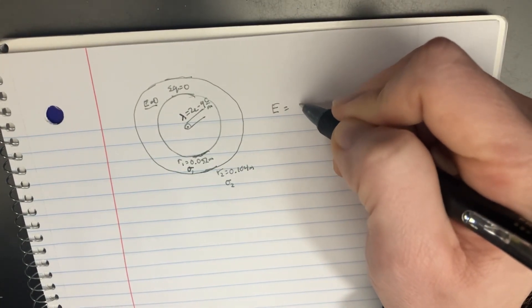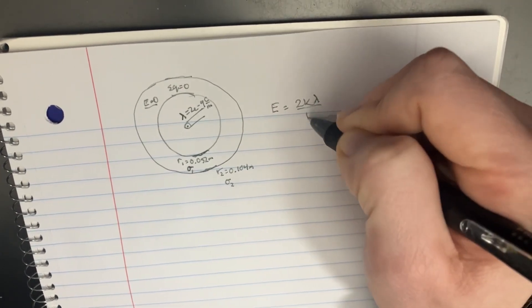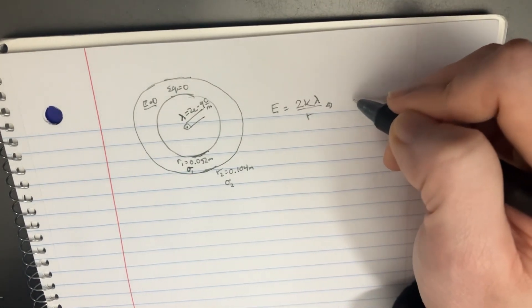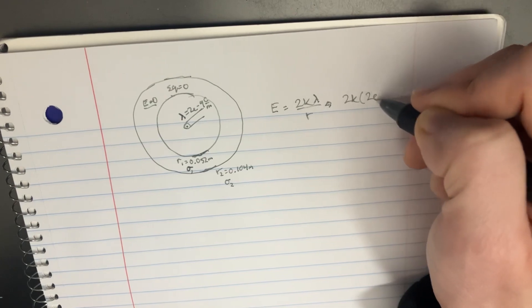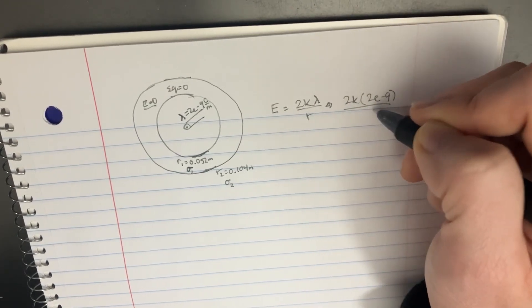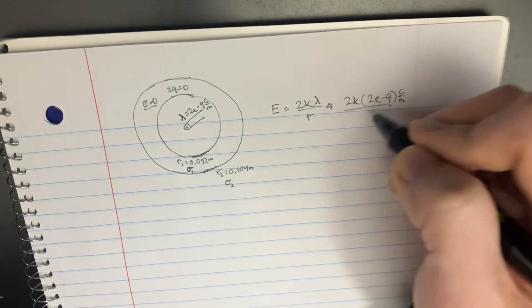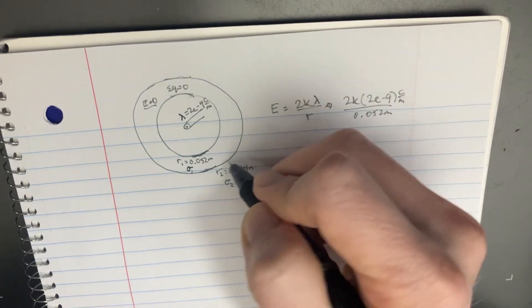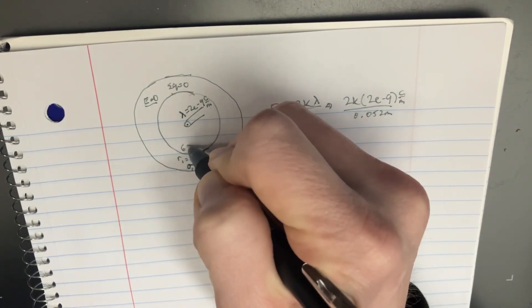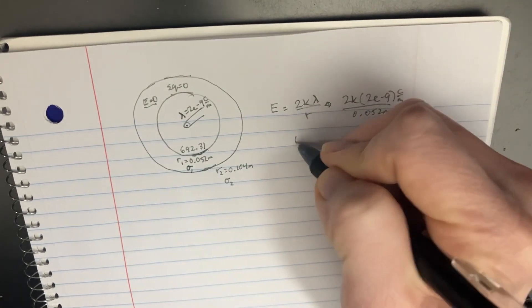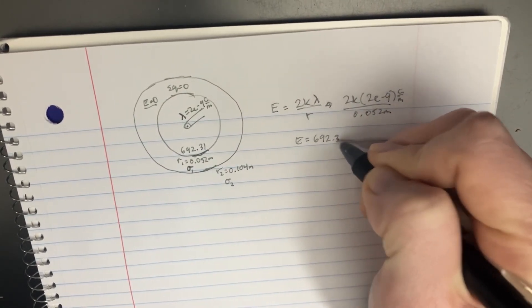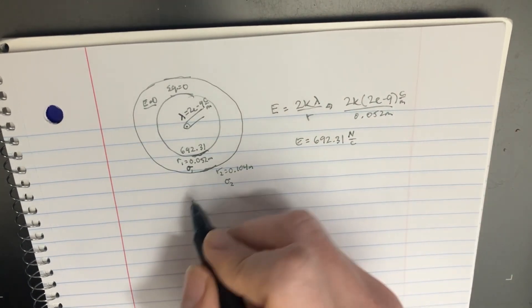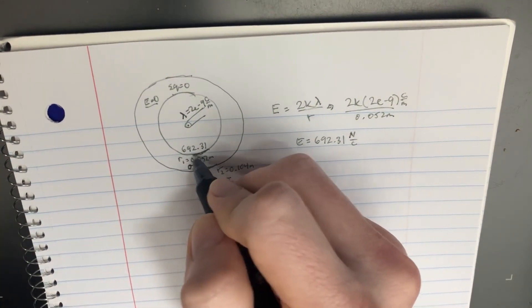So we'll just say that it's 2k lambda over r. That's supposed to be for the cylinder, right? And I'll plug that in. So we'll get 2k, 2E to the negative 9, and then it's supposed to be coulombs over meters, and 0.052 meters. Great. So the answer here is actually going to be somewhere around 692.31. So E equals 692.31, newtons over coulombs here. Great. So that's going to be electric field at this particular point.